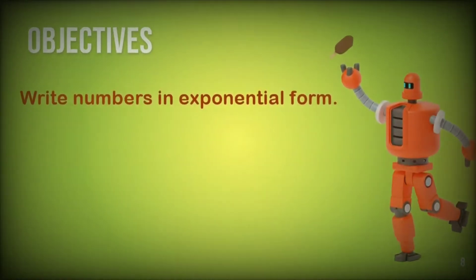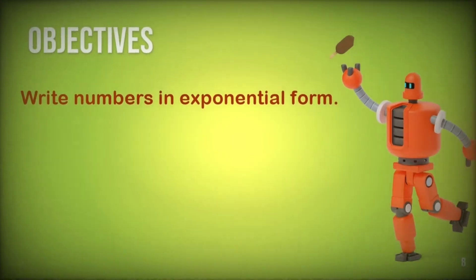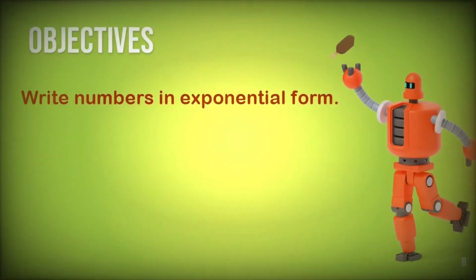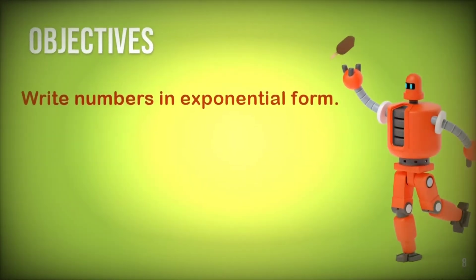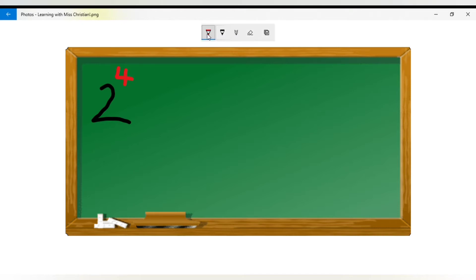Our second objective is to write numbers in exponential form. We will be doing an example together, looking at the number 2 — that's the base number — and it will be raised to a power of 4, which is the exponent.